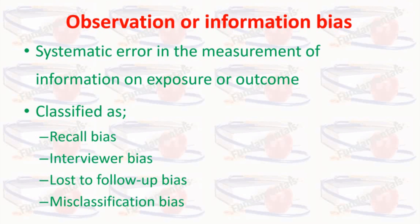Misclassification bias occurs when the sensitivity or specificity of the procedure or questionnaire used to detect exposure or outcome is not perfect. That is, diseased subjects can be classified as non-diseased and vice versa, based on measurement procedures that may be unclear or non-standardized. It is inevitable in every study, always a potential concern, and therefore should be carefully evaluated.